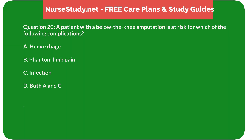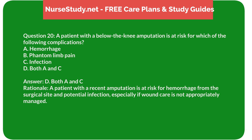Question 20: A patient with a below-the-knee amputation is at risk for which of the following complications? A) Hemorrhage, B) Phantom limb pain, C) Infection, D) Both A and C. Answer: D, Both A and C. Rationale: A patient with a recent amputation is at risk for hemorrhage from the surgical site and potential infection, especially if wound care is not appropriately managed.